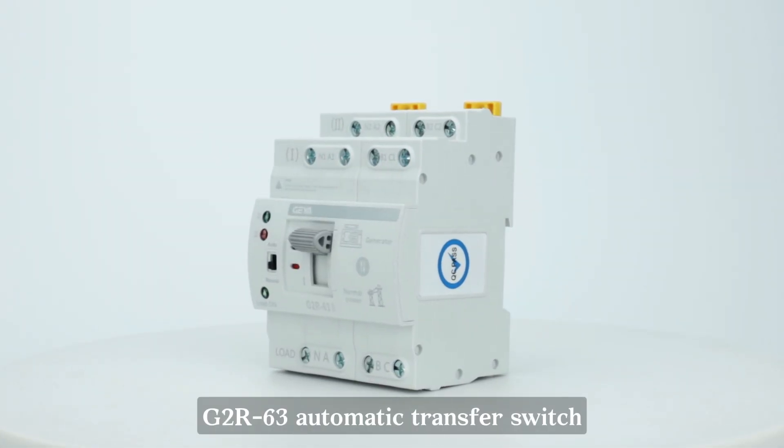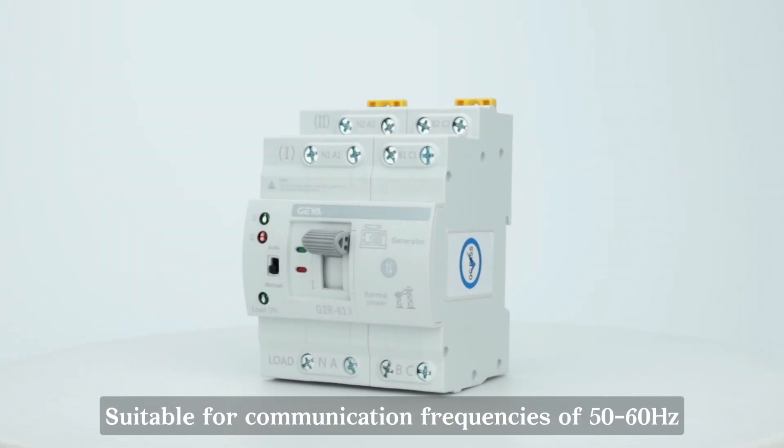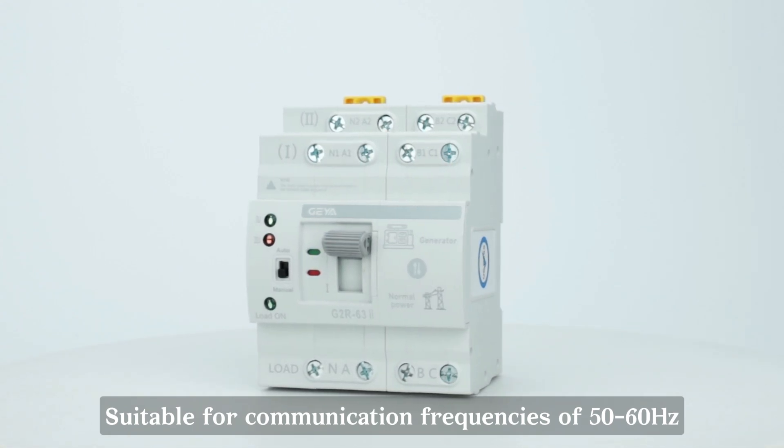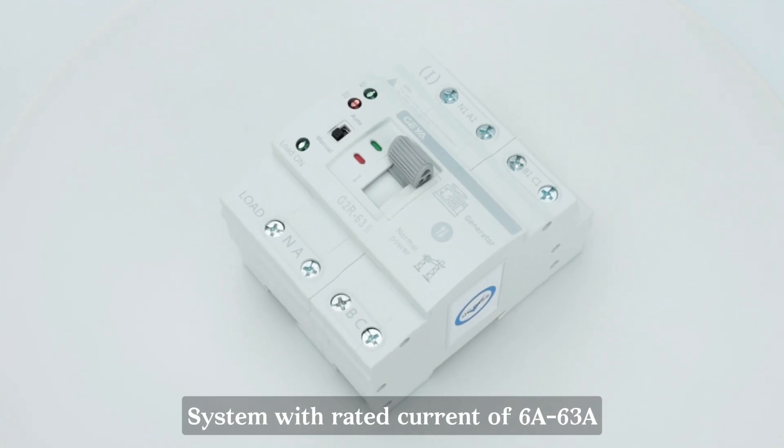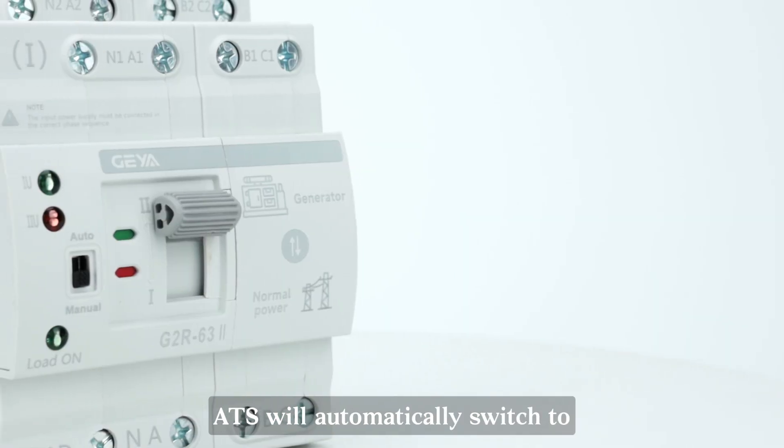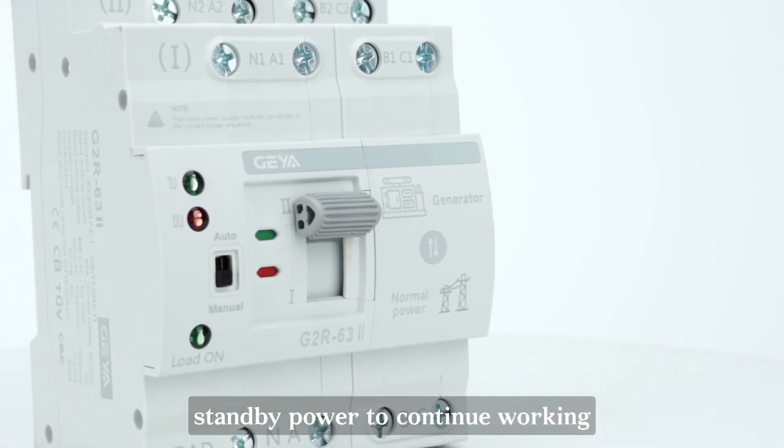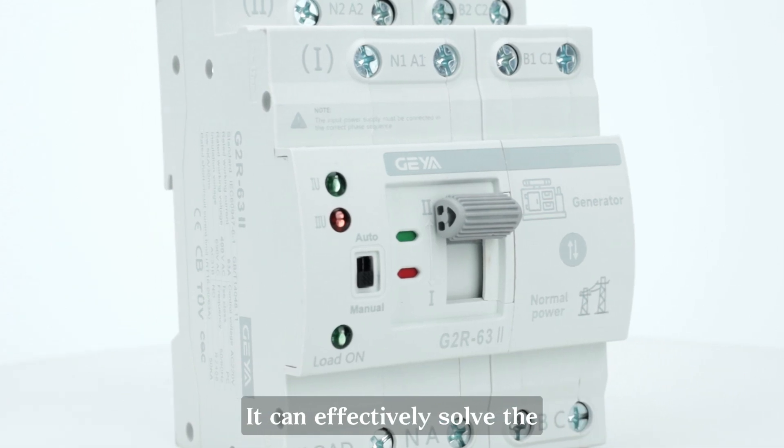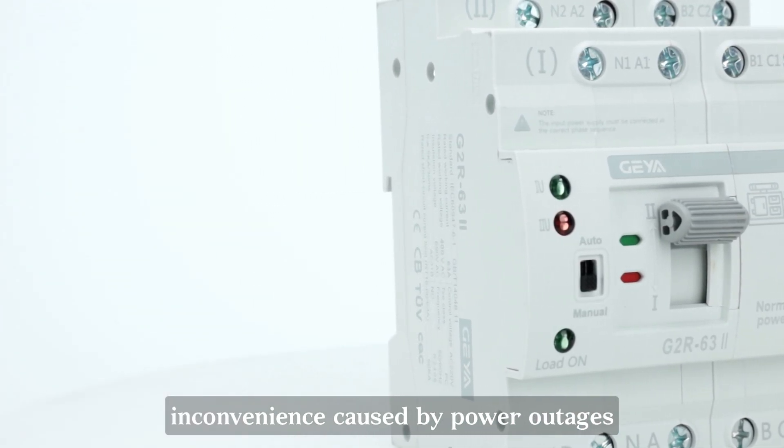G2 R63 automatic transfer switch, suitable for communication frequencies of 50 to 60 Hz, system with rated current of 6A to 63A. When the main power supply fails, ATS will automatically switch to standby power to continue working. It can effectively solve the inconvenience caused by power outages.